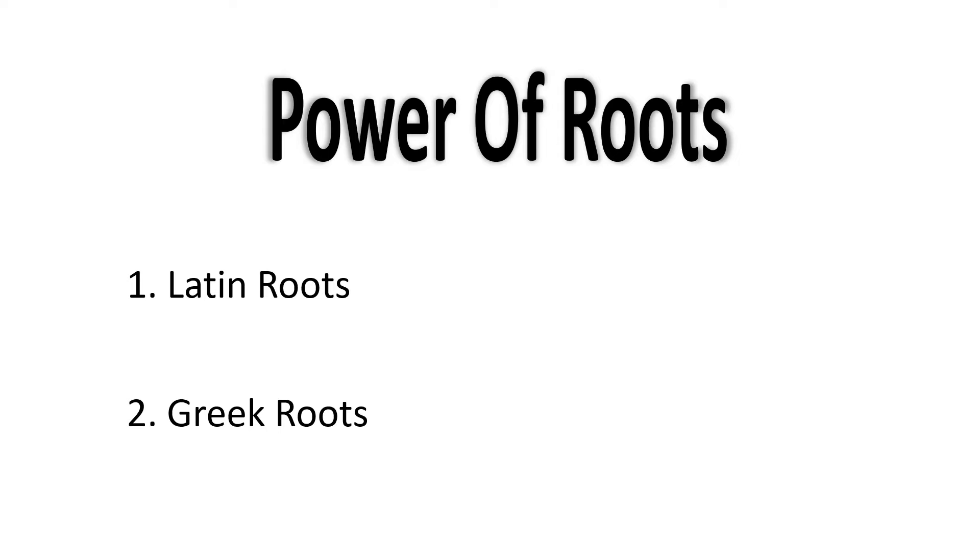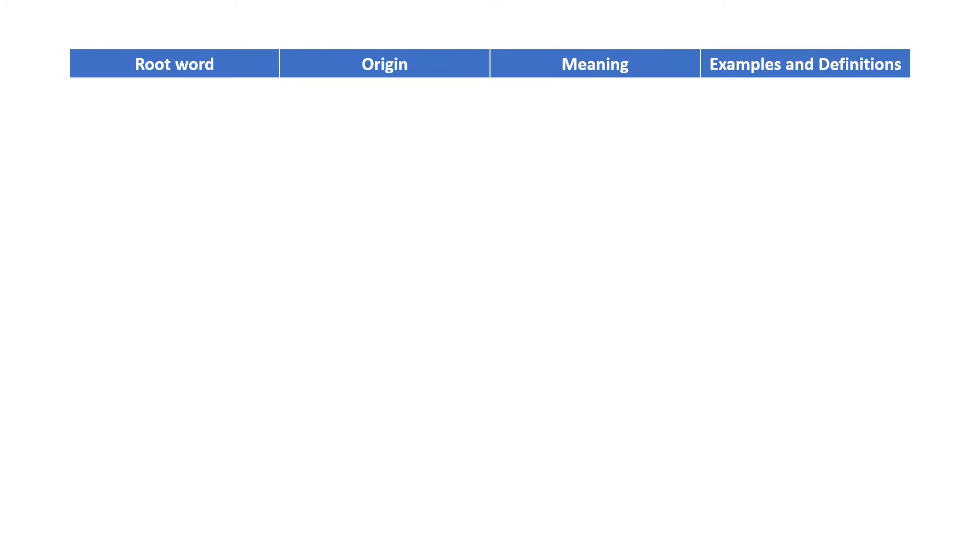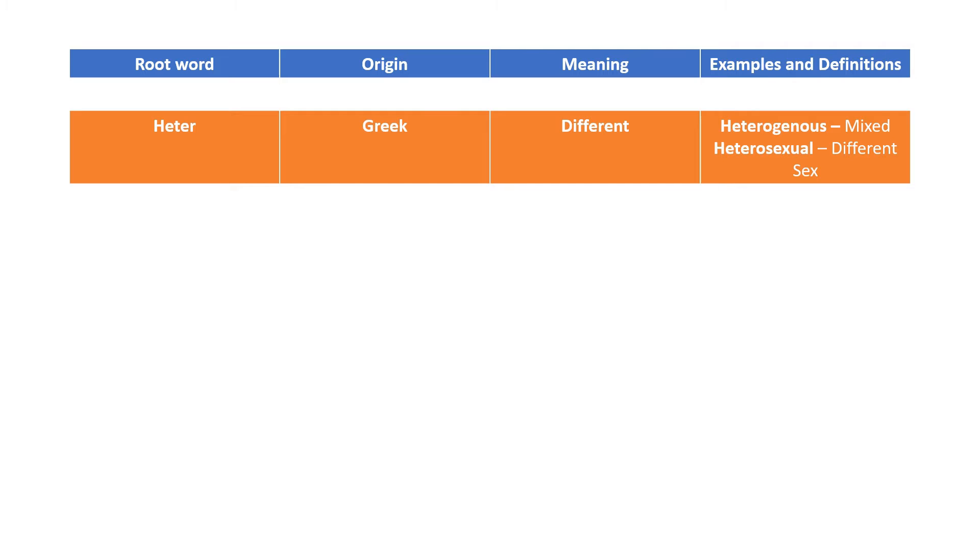Now let us look at some examples of root words, their origin, what they mean and their examples. The first one is hetero.